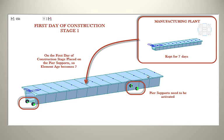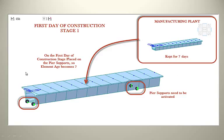So let there be a manufacturing plant near the construction site. The member was cast seven days before, kept there for seven days, and on the seventh day we take it and place it on the construction site — on the pier supports. As you can see in the diagram, the element becomes seven days old. In stage one, we need to activate the elements, the supports, and additionally the self-weight of the member, because as the structure is activated on the pier the self-weight will start acting.